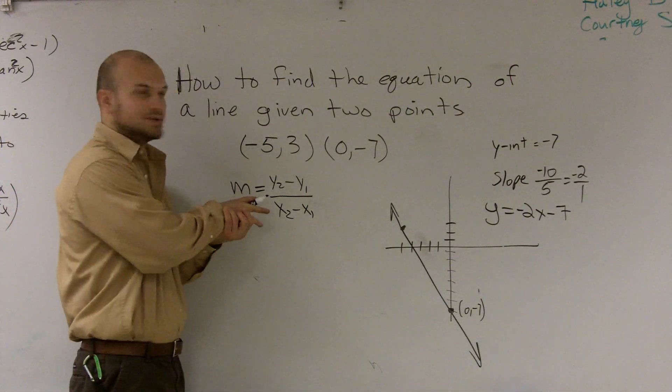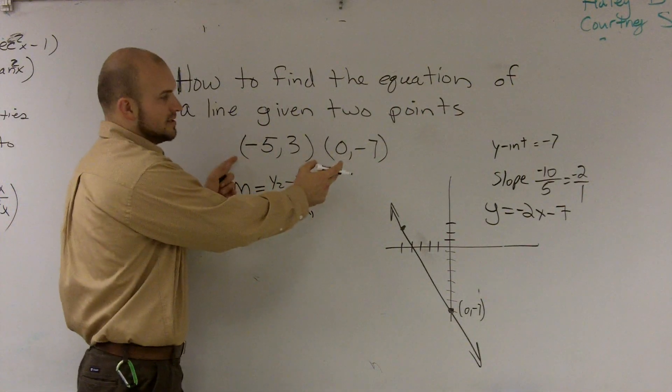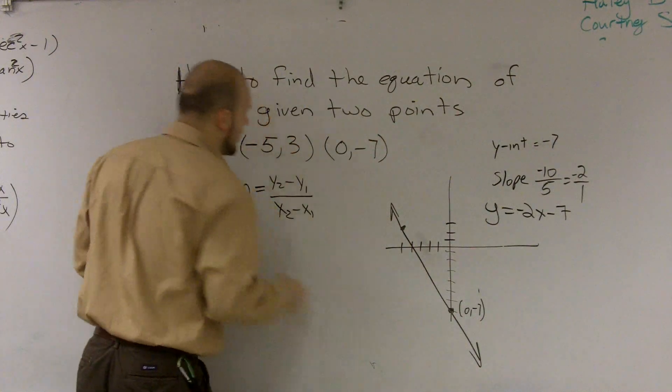So when I want to find the slope between these two points, I'm given two points. Now remember, each point has a coordinate, x and y.